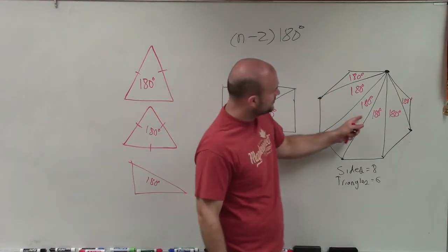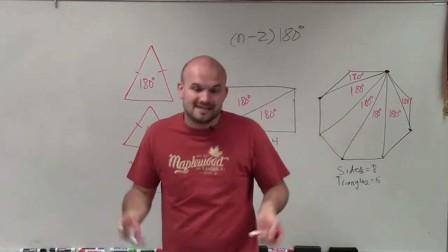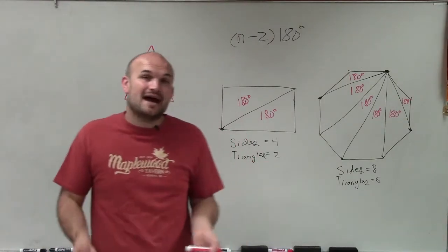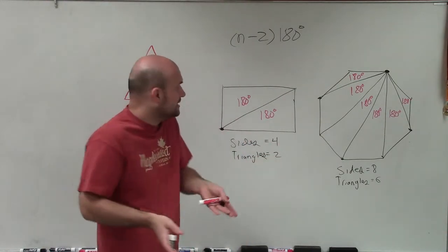And here, I have 1, 2, 3, 4, 5, 6. So I'm adding 180 6 times, which is the same thing as just multiplying 6 times 180.